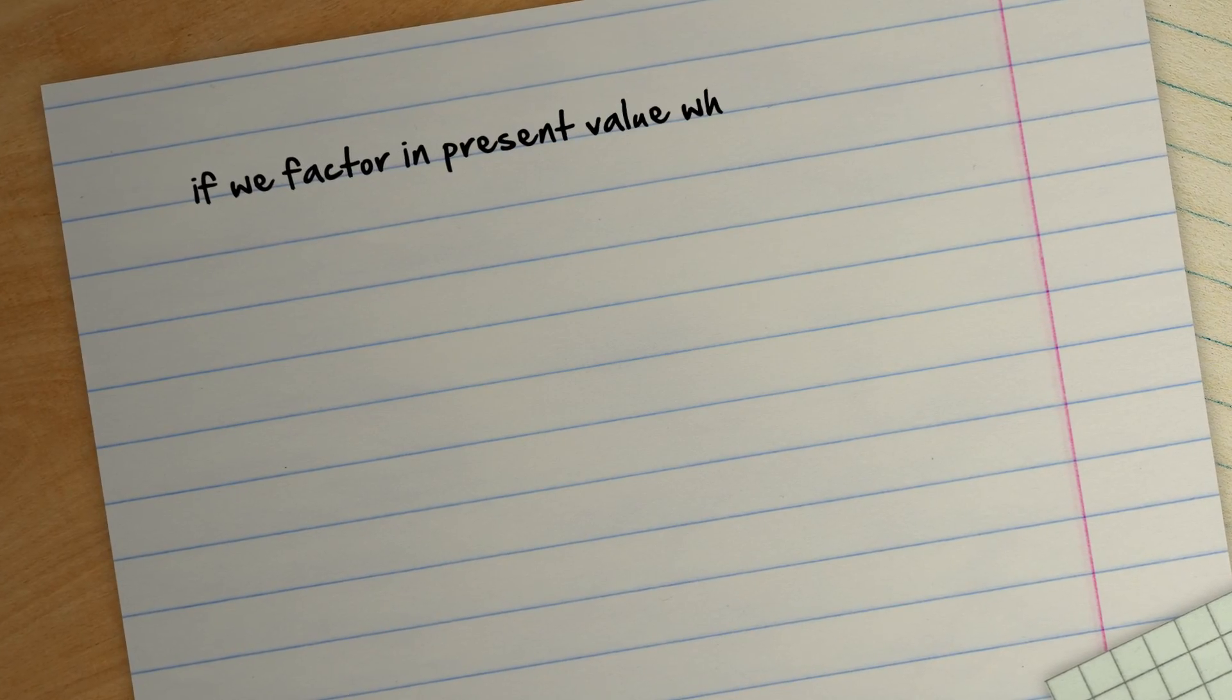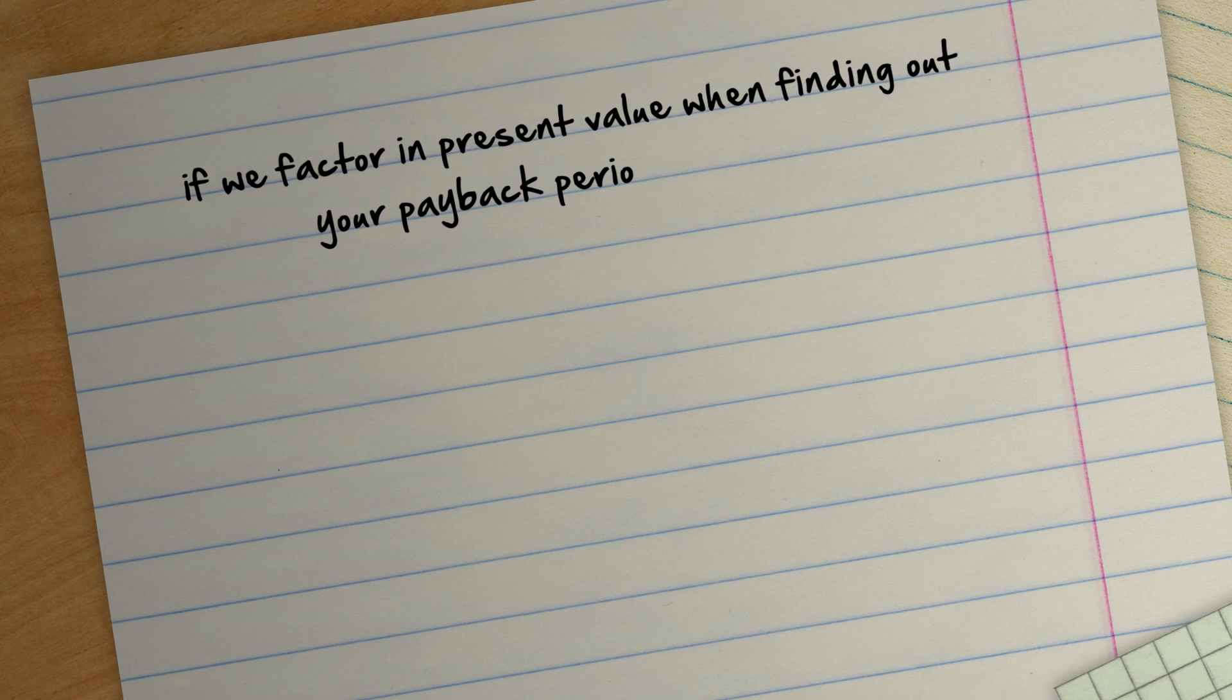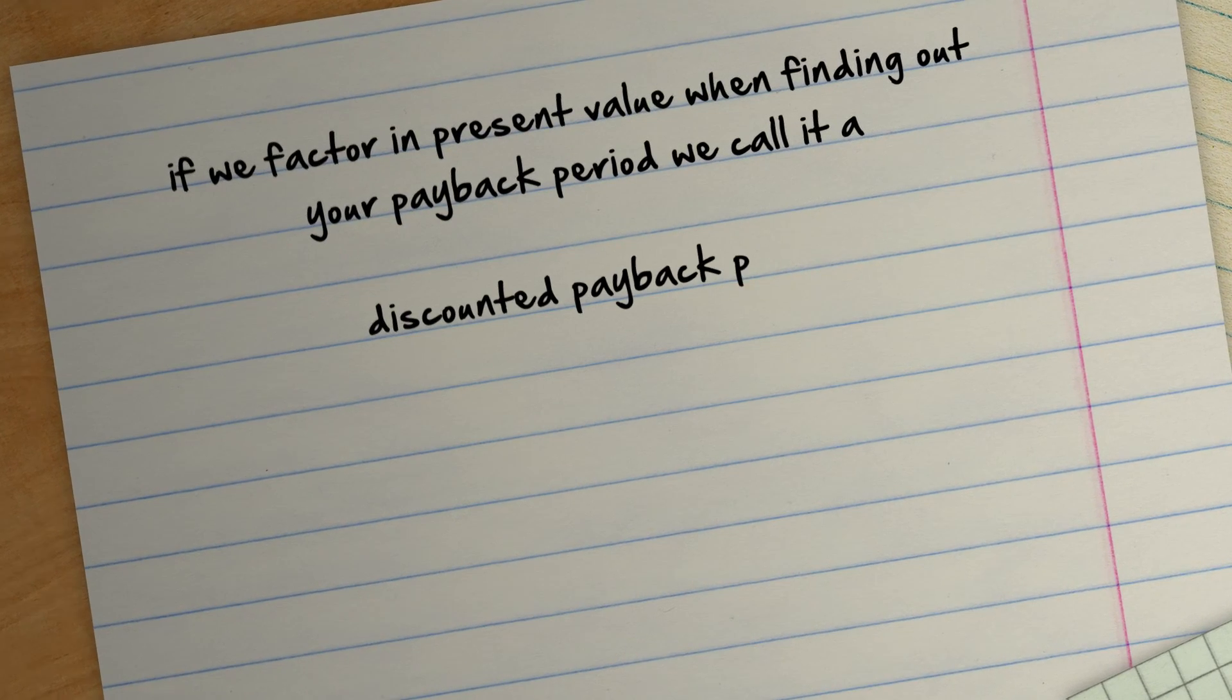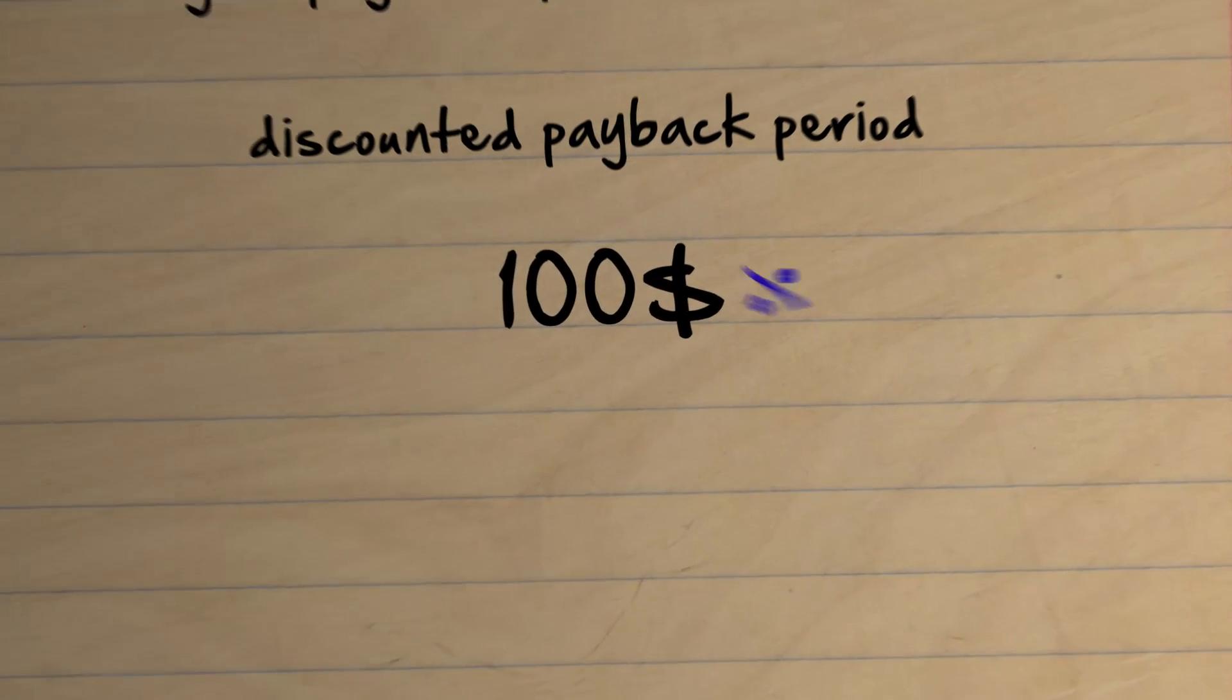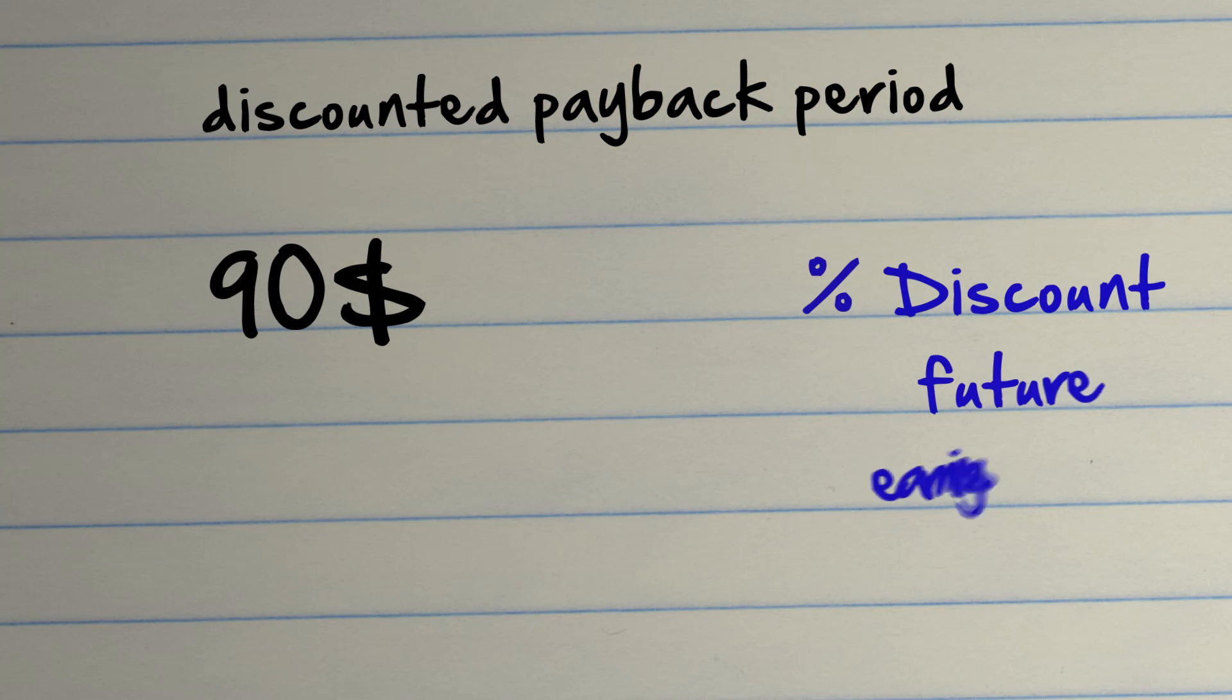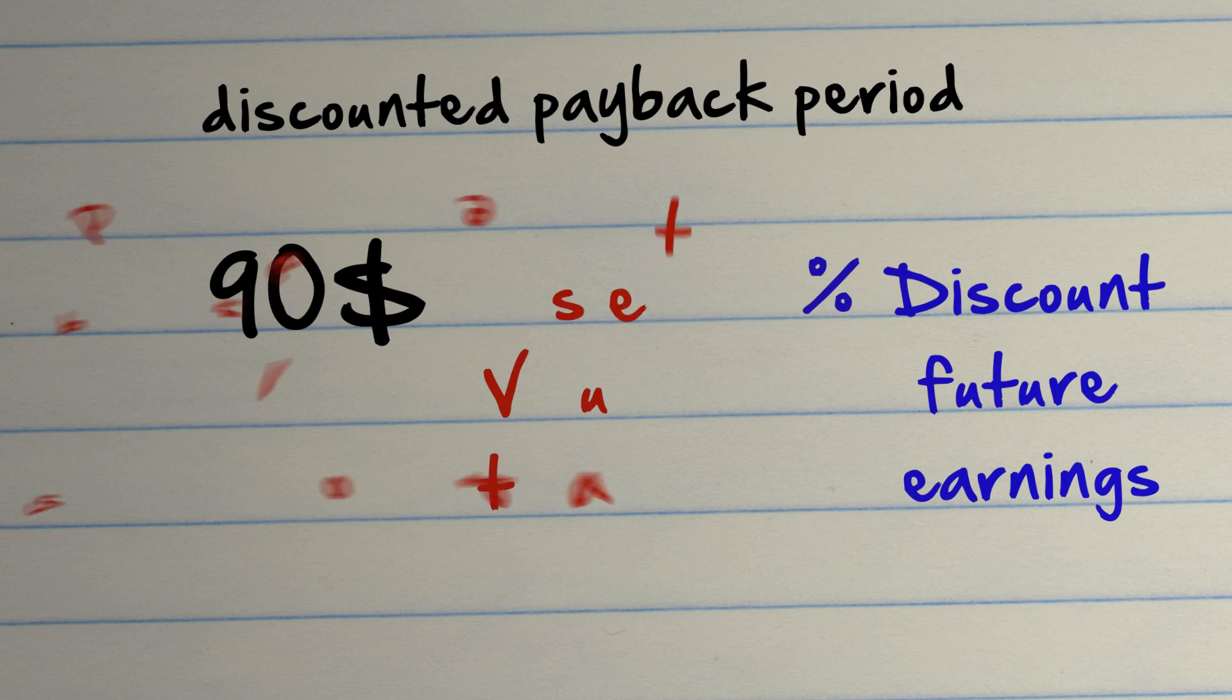If we factor in present value when finding out your payback period, we call this a discounted payback period because we use interest rates to reduce or discount our future earnings so that we can find out their present value today.